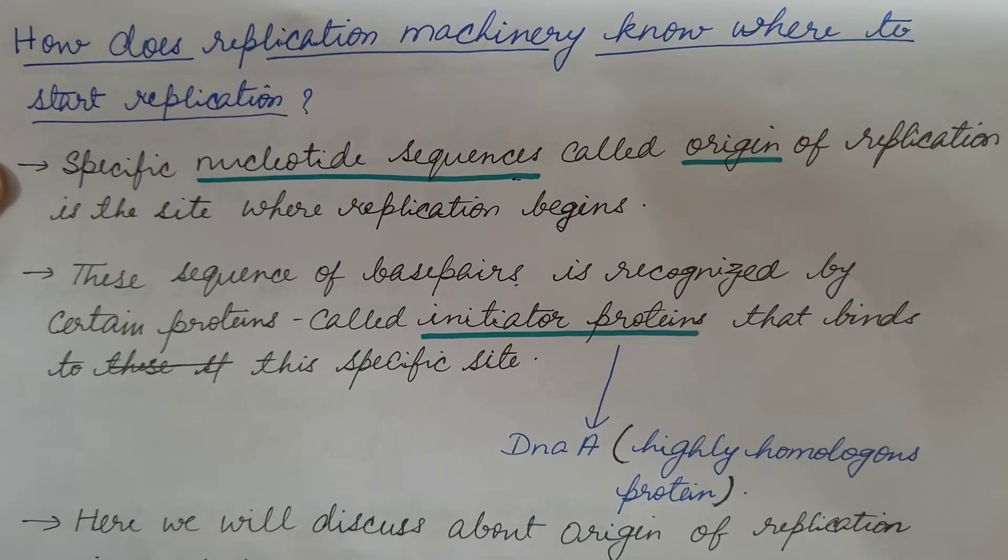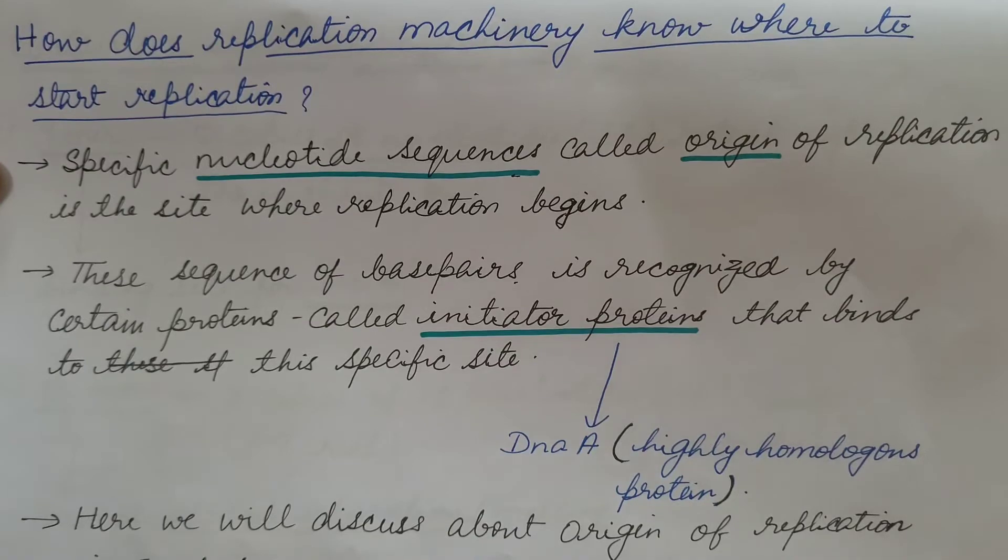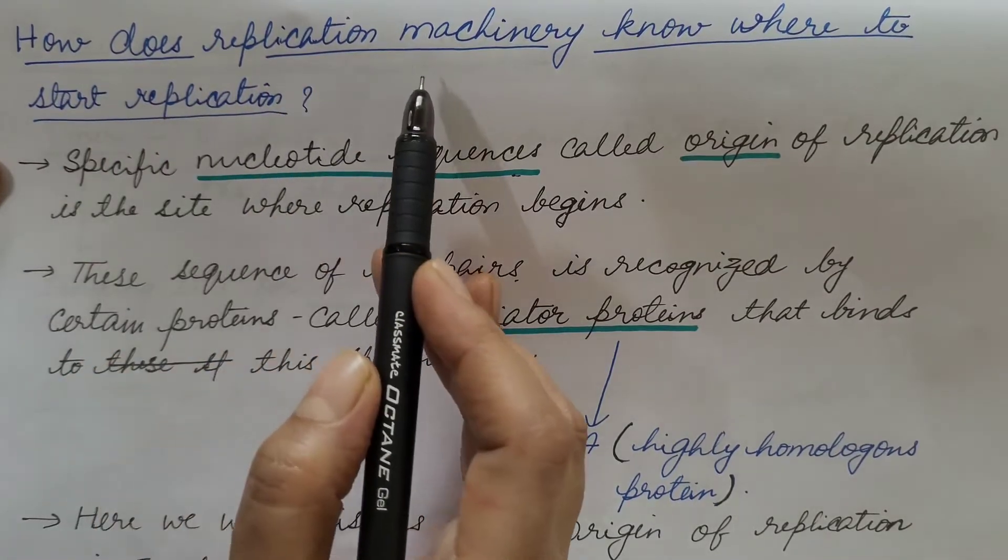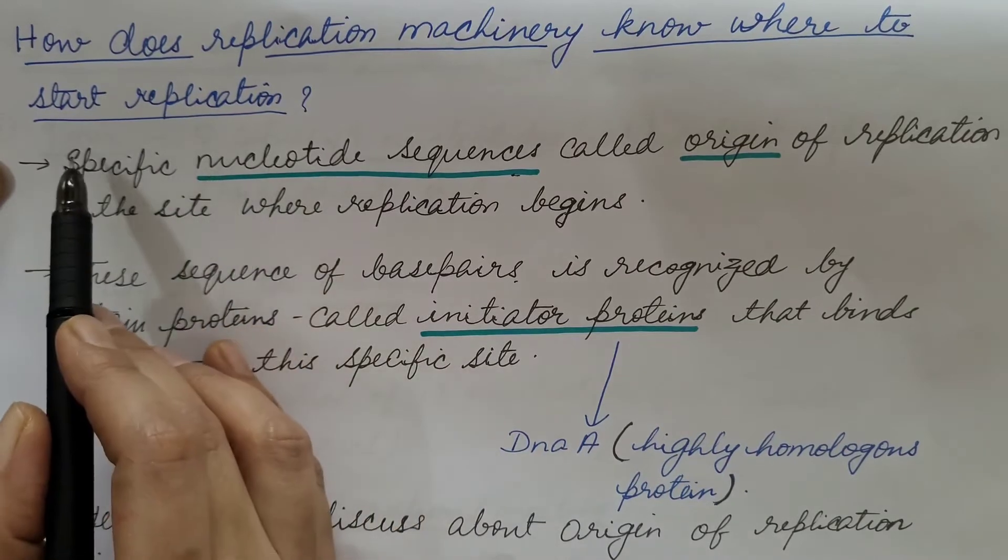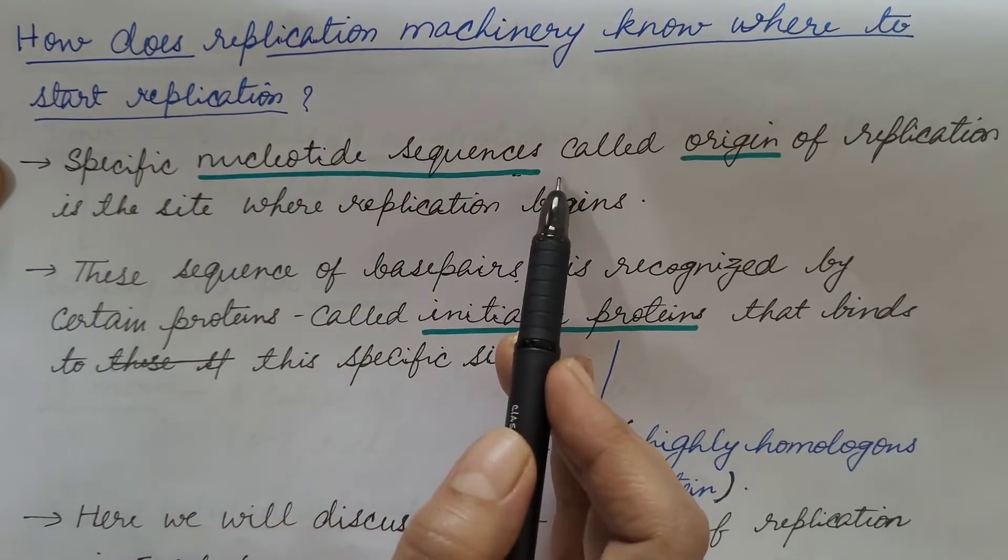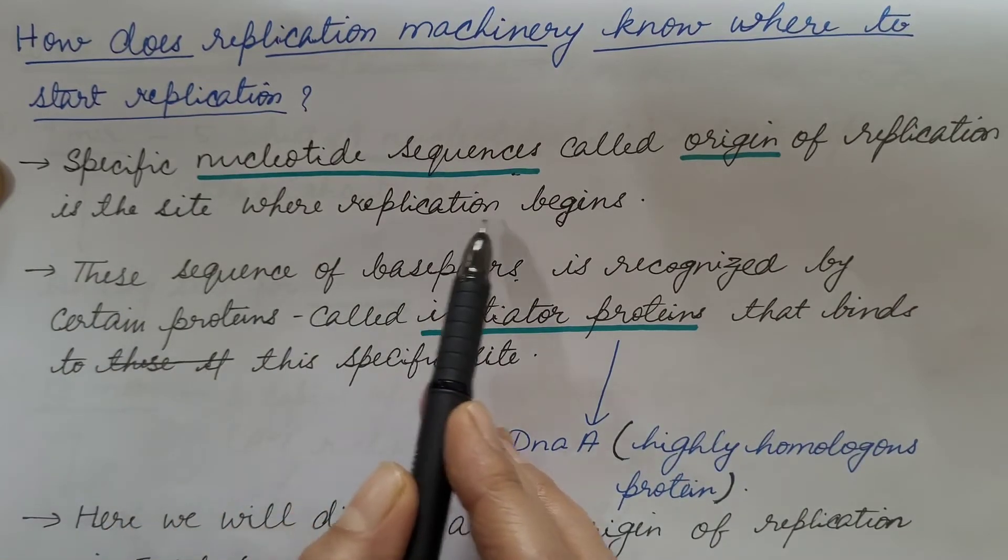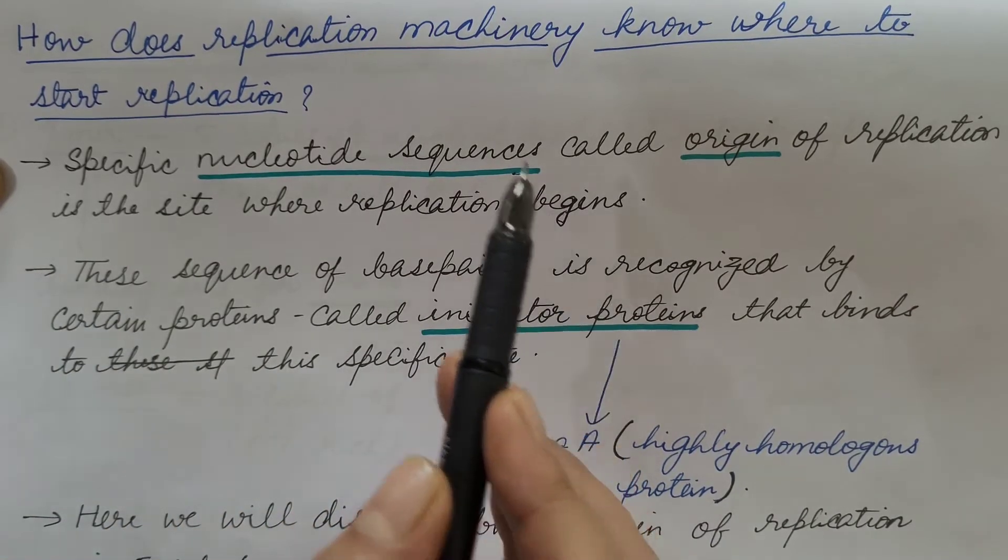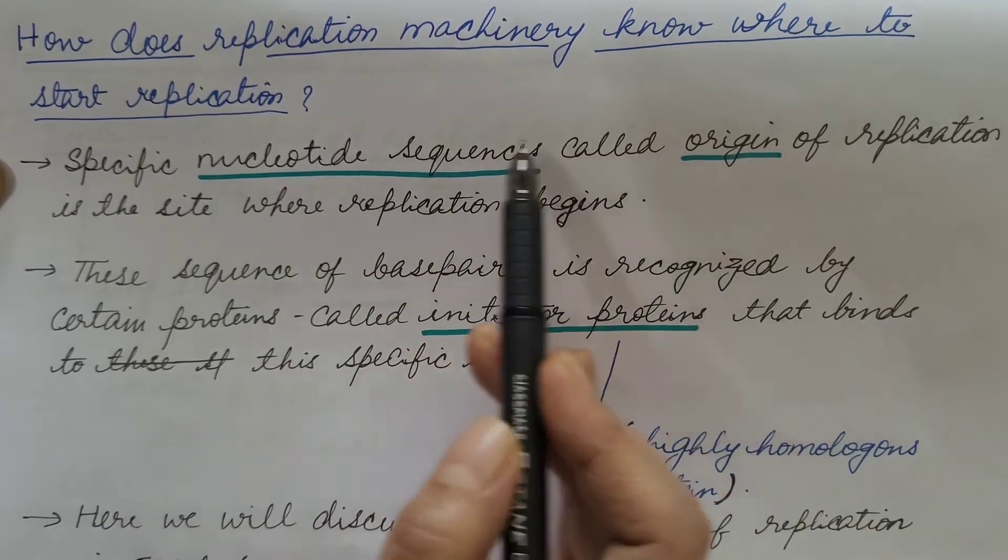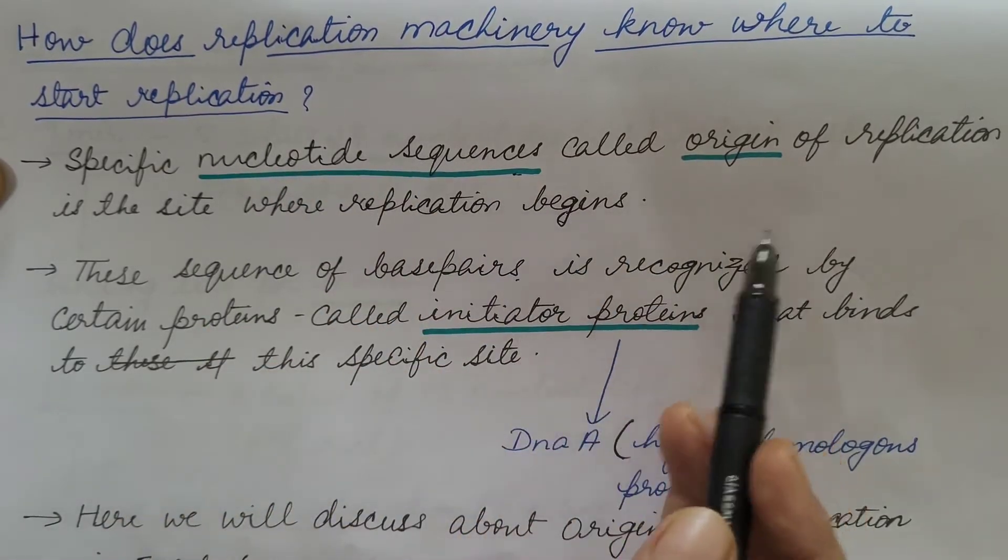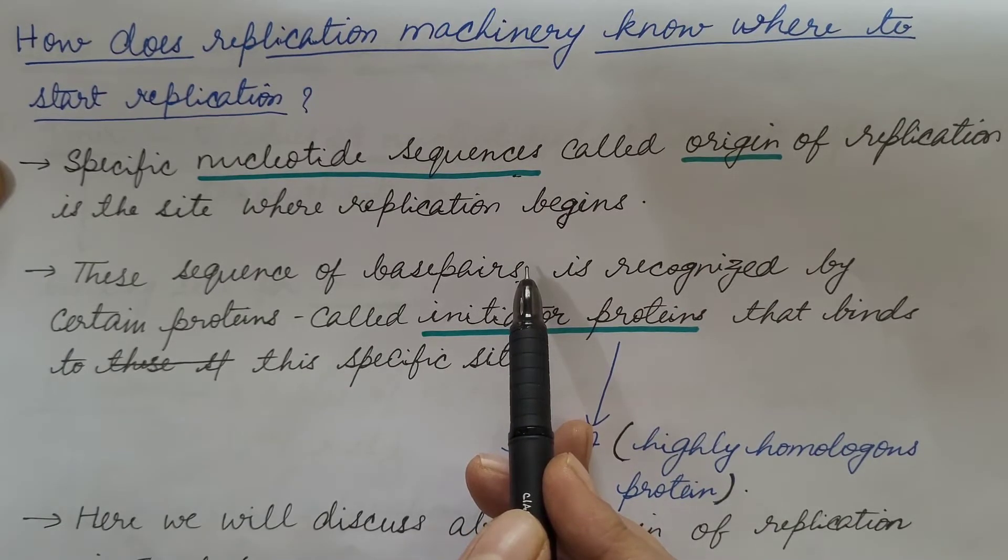So there are certain machinery that are involved in DNA replication. How does replication machinery know where to start replication? Specific nucleotide sequences called origin of replication is the site where replication begins.